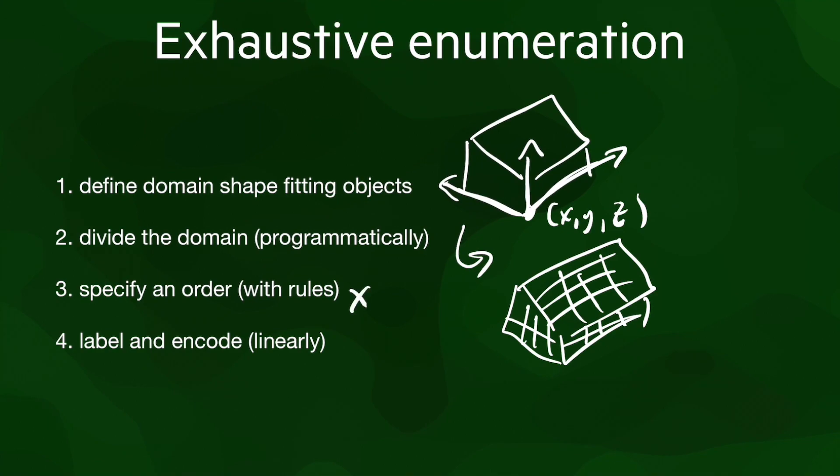Then, we define an iteration order for the cells in the grid, which can be as simple as the order of iterations for each axis. And finally, we encode the values of all the cells using all of the previous information.